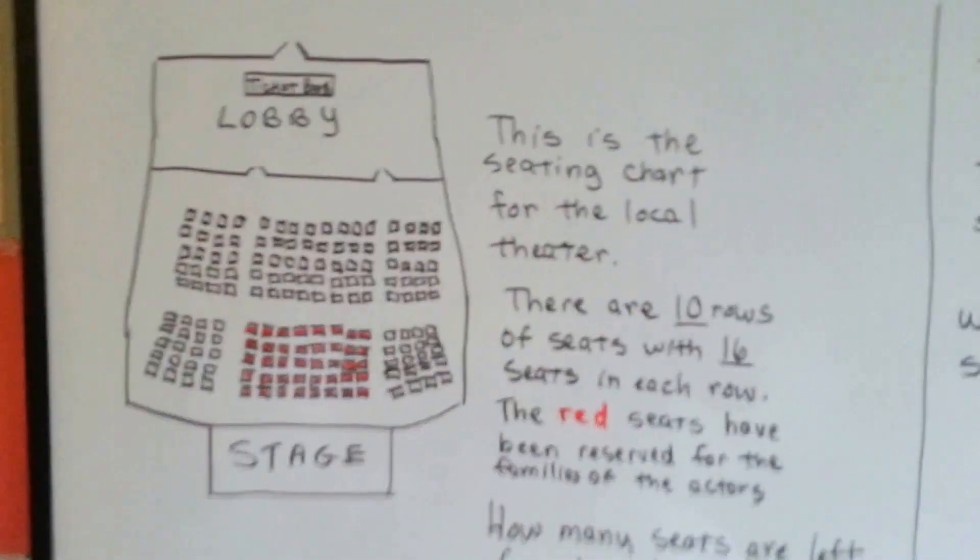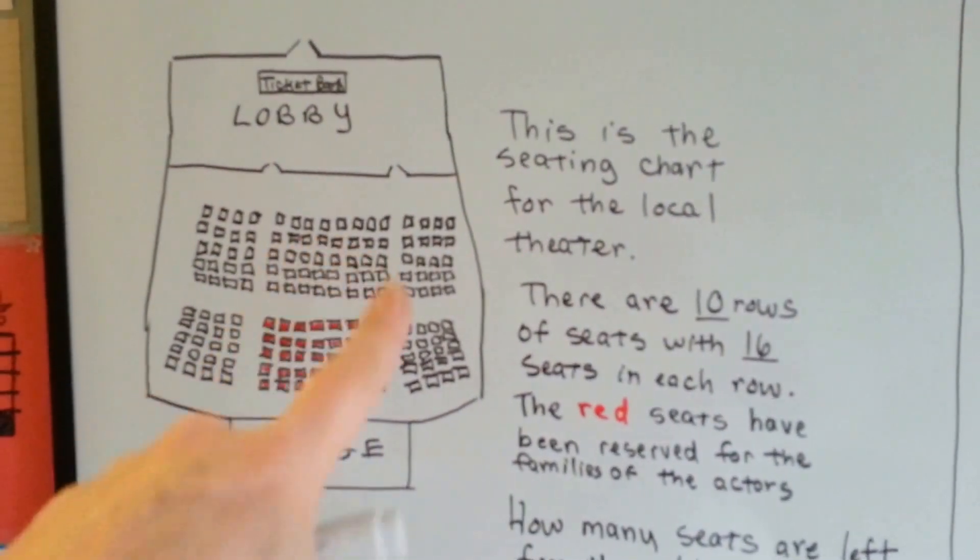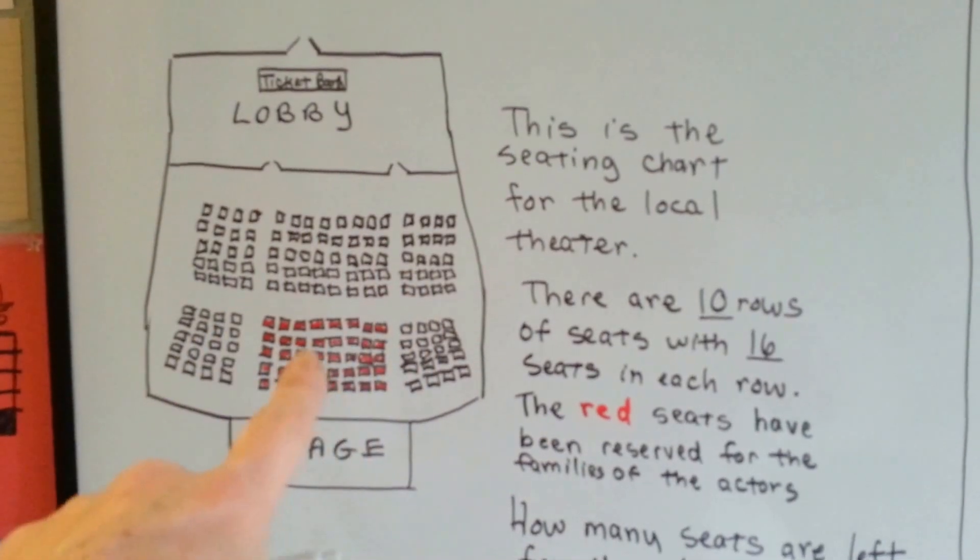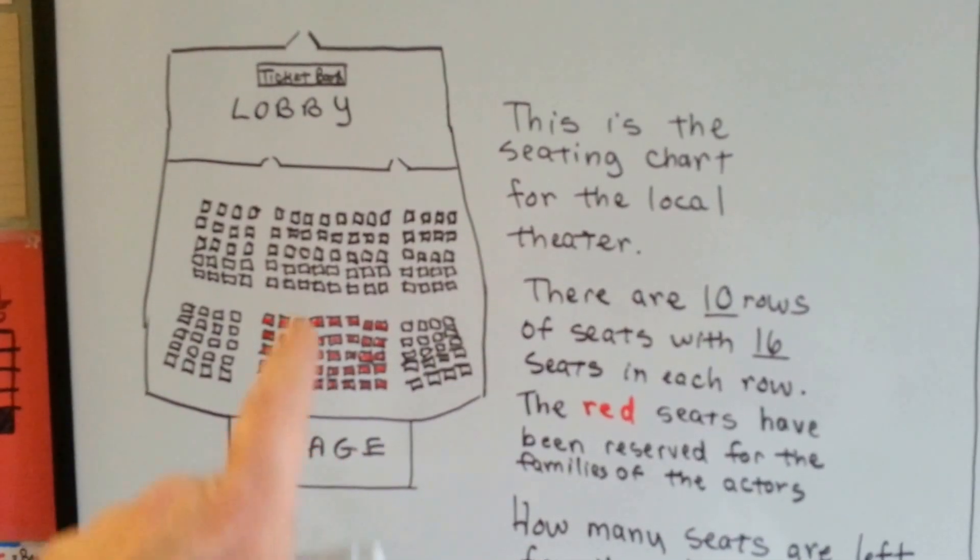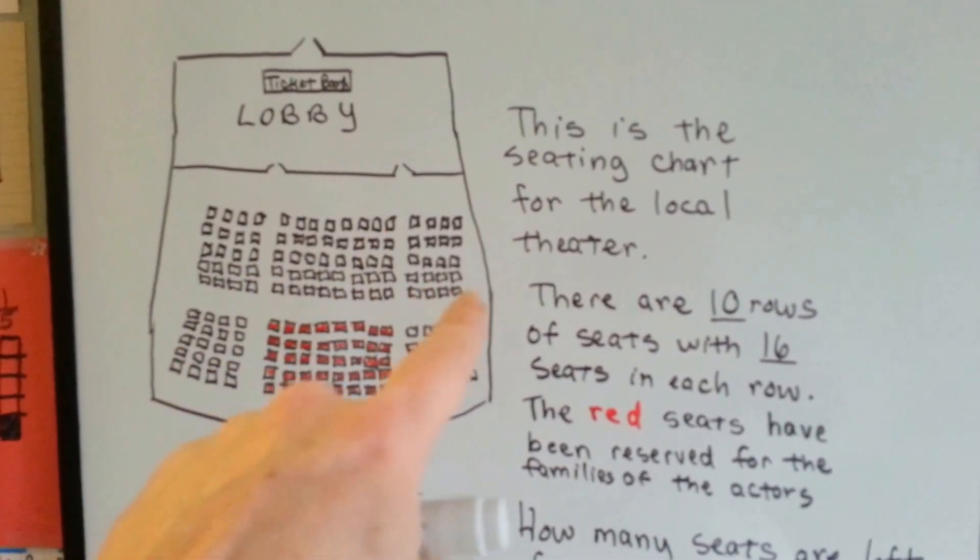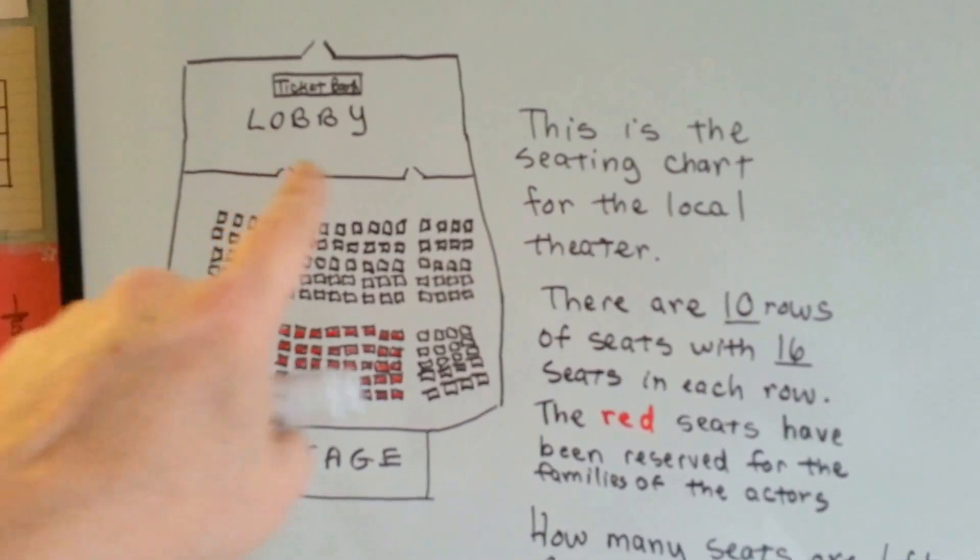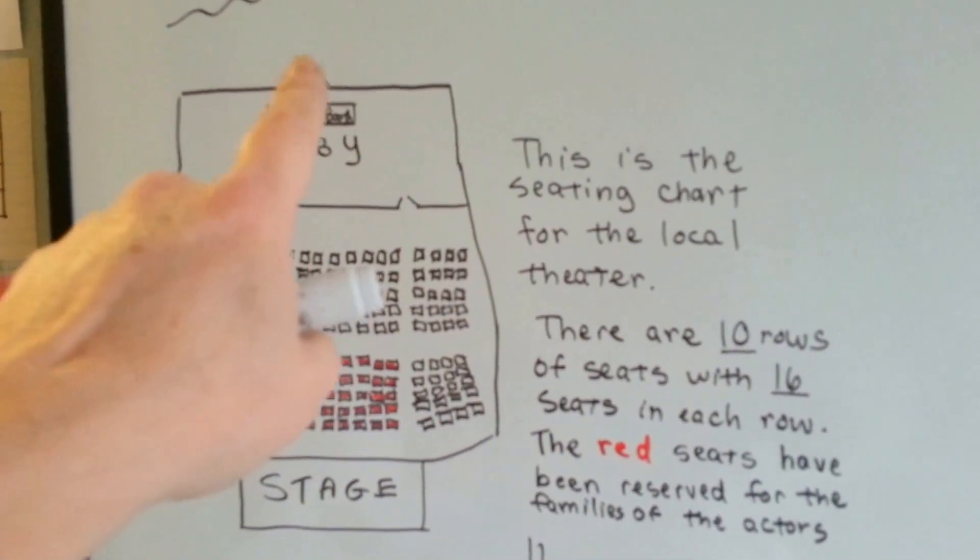The first thing we've got is a theater. You can see all the seats here. Some of them are colored red. Here's the stage. Here's the aisles for people to walk in. And here's the lobby. There's the ticket booth and the doors to go outside.